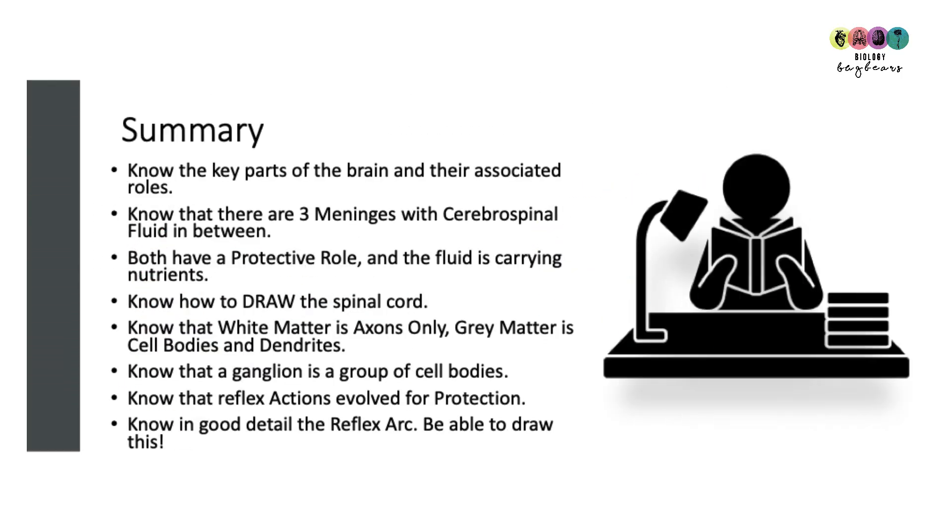So that's the end of the nervous system. Know the key parts of the brain and the associated roles of each of them. Know that there are three meninges with cerebrospinal fluid and know that cerebrospinal fluid has a protective role and it's also carrying nutrients. Know how to draw the spinal cord, so important, and know that white matter is axons only, grey matter is cell bodies and dendrites. Know what a ganglion is and know that reflex actions are there for our protection and know in very good detail the reflex arc and be able to draw and label this perfectly.